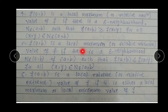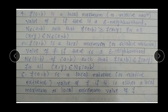F(A,B) is the Local Minimum or Relative Minimum value of F if there is a delta neighborhood of (A,B) such that F(A,B) ≤ F(x,y) for all x, y belonging to the delta neighborhood of (A,B). F(A,B) is either less than or equal to F(x,y) for all neighborhood points, meaning F(A,B) becomes the minimum value. This is called local minimum or relative minimum.